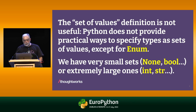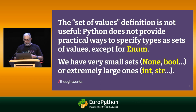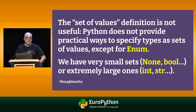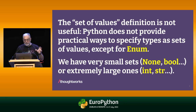The set-of-values definition is not useful for other reasons also, because Python does not provide practical ways to specify types as sets of values — except for a few. In practice, in the standard library, we have very small sets like the NoneType, which has only one instance, None; Bool, which has two instances; and on the other hand, extremely large ones with billions of instances like int and string, where the possible values are only limited by the width of the pointer in the machine.